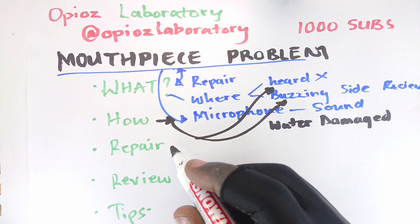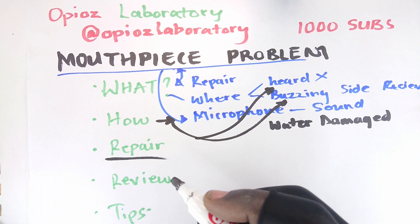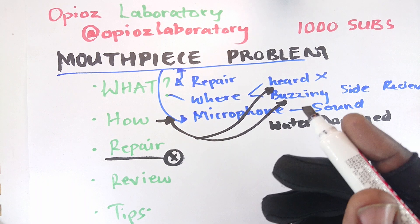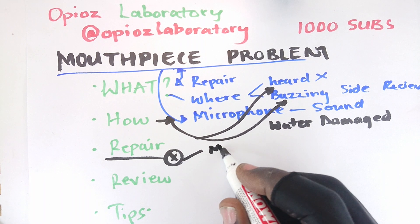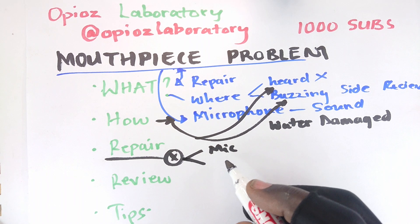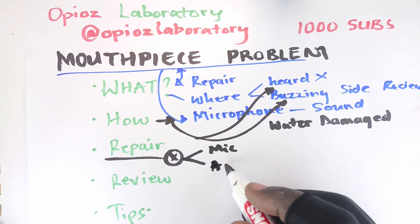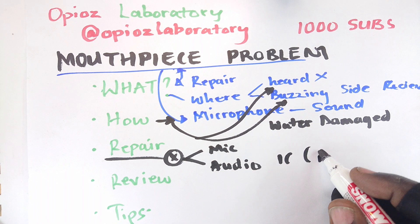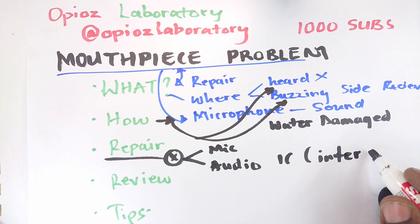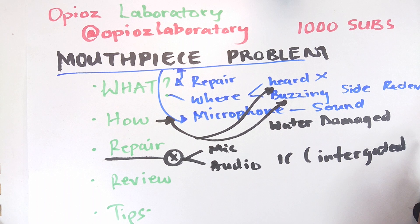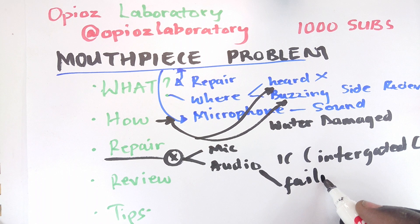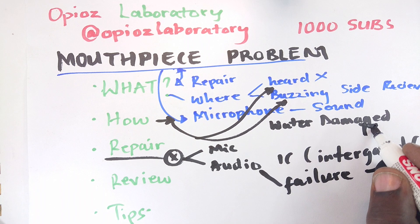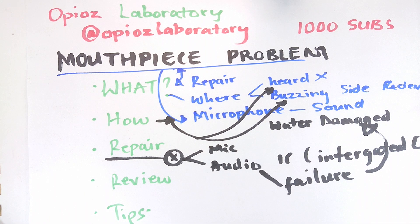In this repair business, there are about two instances that we find in this case. One, the physical microphone itself — which I'll abbreviate as mic — is faulty. Two, the audio IC. IC meaning integrated circuit is actually affected, and that can happen in either of the two cases: natural failure or water damage.